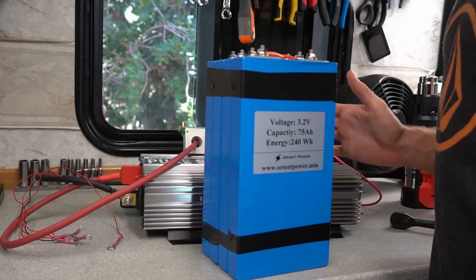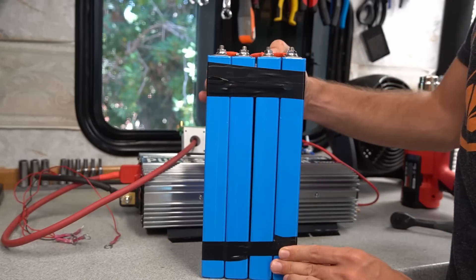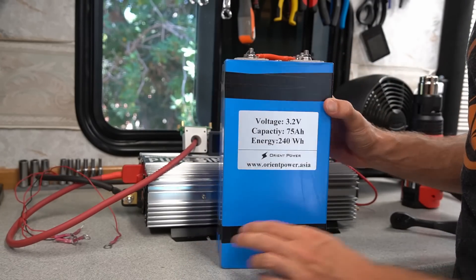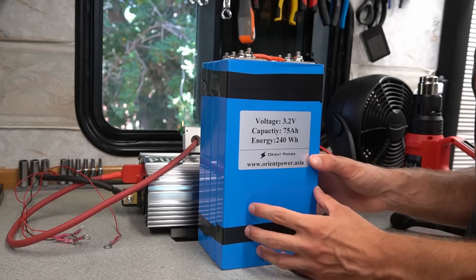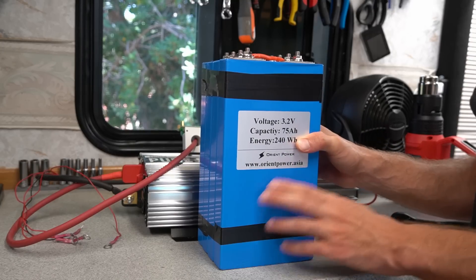So now we're going to test this blue one. So this is an aluminum case lithium iron phosphate and if you want to learn more about the pros and cons of these ones in particular check out my other video. But we're going to just do a capacity test and see how well they perform.